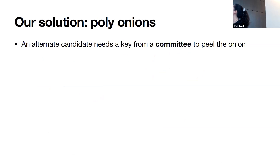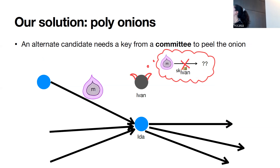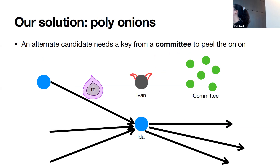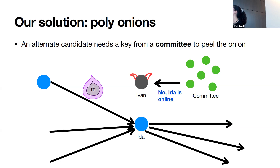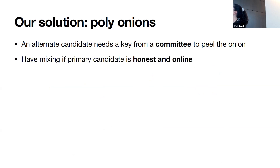Our solution — poly onions — introduces a committee and distinguishes between a primary candidate who can peel the onion if online versus an alternate candidate who can peel the onion only if the primary is offline. The alternate needs to receive a key from a committee in order to peel the onion, so the alternate can't peel it just with its own secret key. Ivan can no longer perform the tracing attack alone — instead Ivan needs to ask the committee for a key. The committee asks Ida if she's online; if she's honest and online, it tells Ivan: 'Ida is online, I'm not giving you the key,' and Ivan cannot peel this onion.